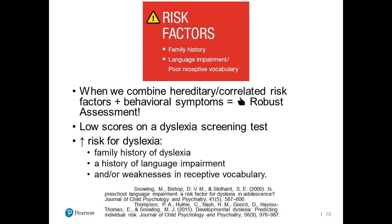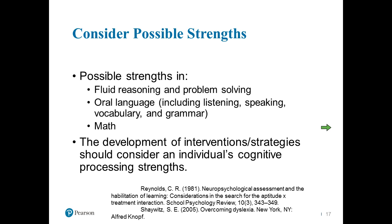In light of all that, we have to consider possible strengths, because this goes back to the uneven cognitive profile — we tend to see peaks and valleys in their profiles. Relative strengths often include reasoning and problem-solving, more of the executive functioning components. Oral language — listening, speaking, vocabulary, grammar — can often be a strength in children with dyslexia, and math also tends to be a strong area. Whenever developing interventions, the most effective ones are based on cognitive strengths.